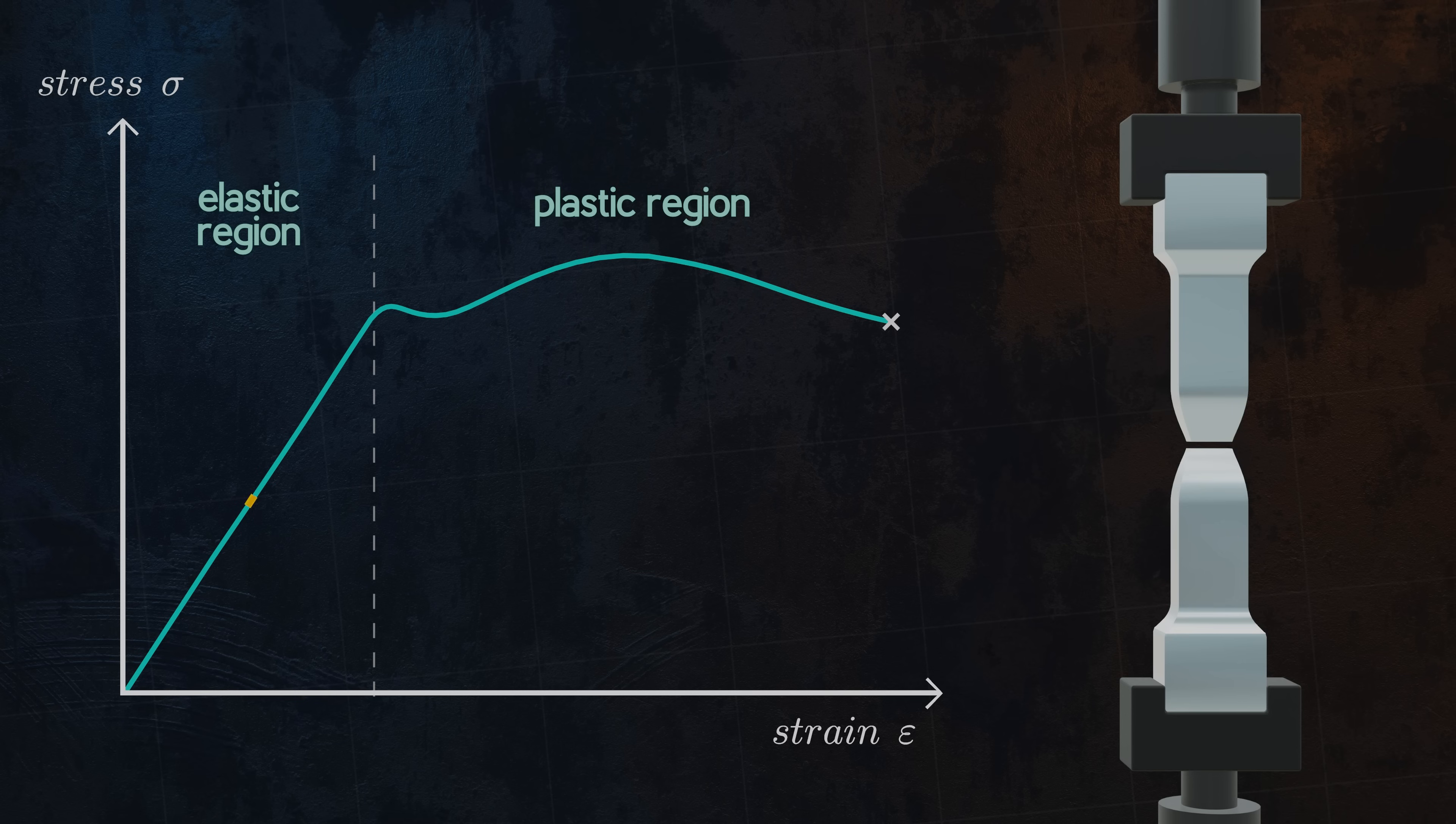In the elastic region, the stress-strain curve is a straight line for most materials. This means the strain is proportional to the applied stress. Hooke's Law gives us the relationship between stress and strain in this linear elastic region. The ratio between stress and strain is Young's modulus, also called the modulus of elasticity, which we denote with the letter E.